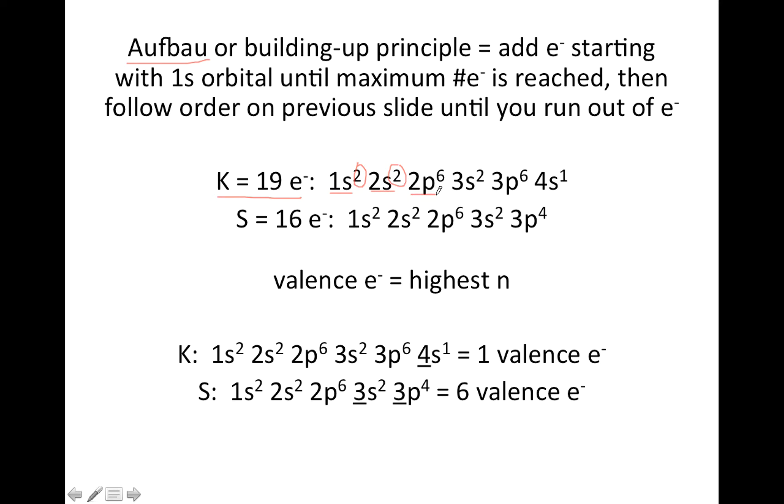Then you go on to 2p. Now remember, p orbitals occur three at a time, and you can fit two electrons in each, so you can fit a total of six in a set of p orbitals. Then we go 3s, and we can fit two electrons. 3p, we can fit another six electrons. If you stop right there, that would be 18 electrons.